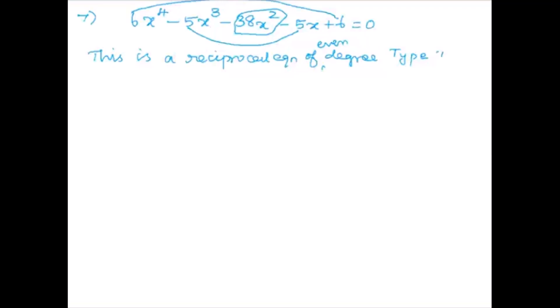Since the middle term has no pair, we divide by x² throughout the equation. We get: 6x² minus 5x minus 38 minus 5/x plus 6/x² is equal to zero. Now combining the first and last terms.